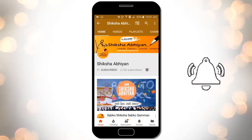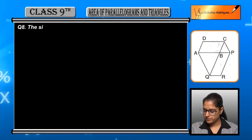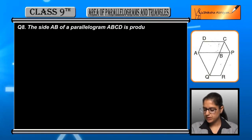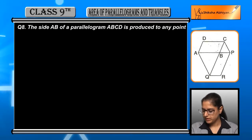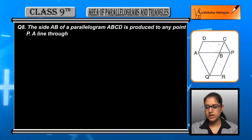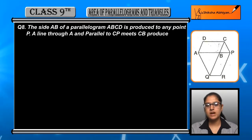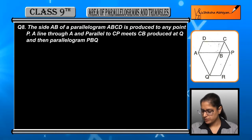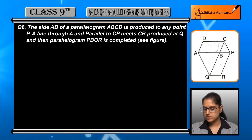Question number 8: The side AB of a parallelogram ABCD is produced to any point P. A line through A and parallel to CP meets CB produced at Q. Prove that ar(PBQR) = ar(ABCD).